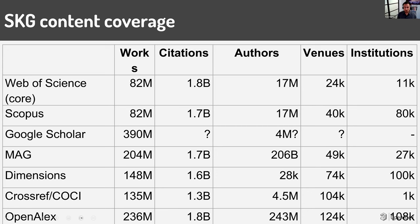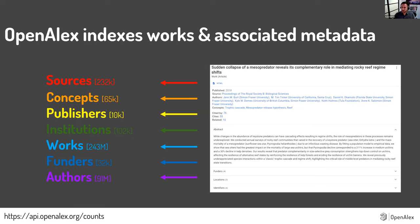Every time a new work is found and indexed, we extract the metadata associated with it and enhance it in some ways. This is an example of one of my publications — you can see the HTML of the article since it's open access, where it's published, the authors and their affiliations, and some concepts that are like subject areas. There are 65,000 of these concepts, organized in a multi-layer hierarchy, and each one is linked to something in Wikipedia. So these aren't random strings of words — they're actually meaningful research concepts.